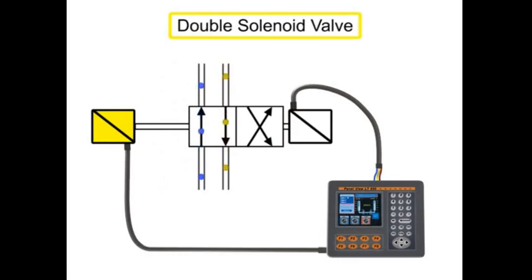Double solenoid valves have two solenoids, typically mounted on opposite ends of the valve body. This type of two-position double solenoid valve does not have a spring return. When the first solenoid is energized, the valve spool shifts into the first position.